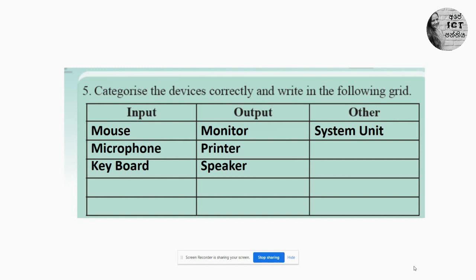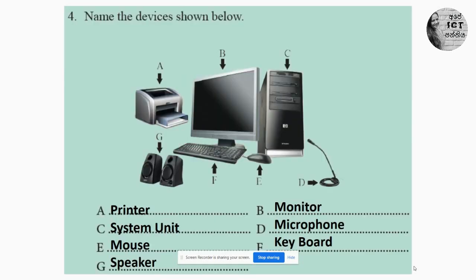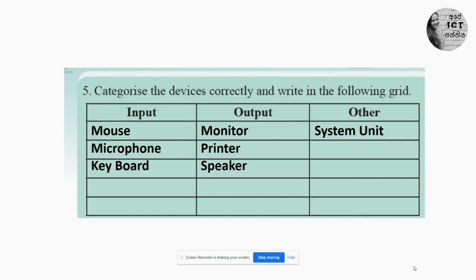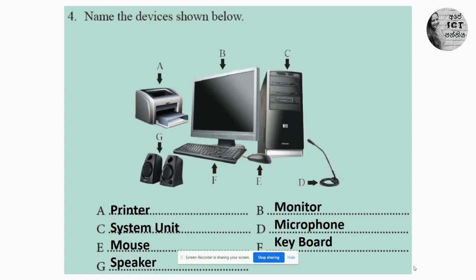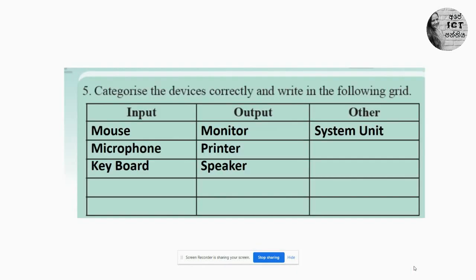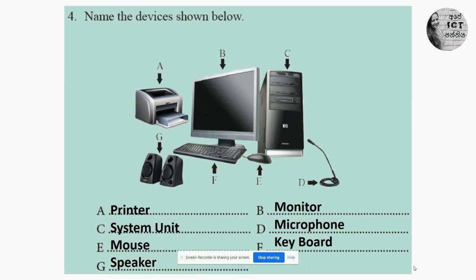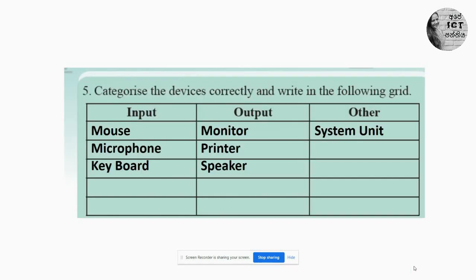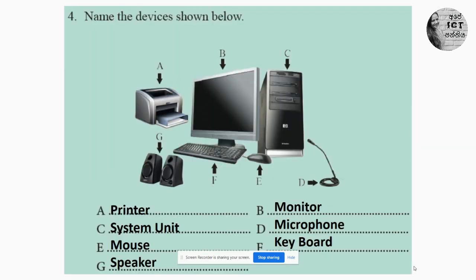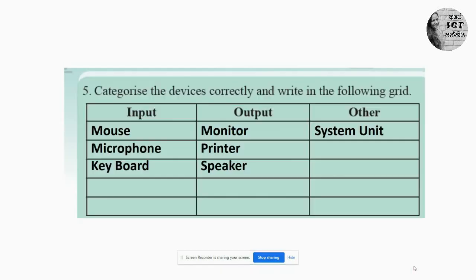Then we will move to the fifth question: categorize the devices correctly and write in the following table. It asks about the devices we wrote in question 4. Printer is an output device. System unit is not an input or output, so we will move it into the other category. Monitor is an output device. Microphone is an input device. Mouse is an input device. Keyboard is also an input device. Speaker is also an output device.